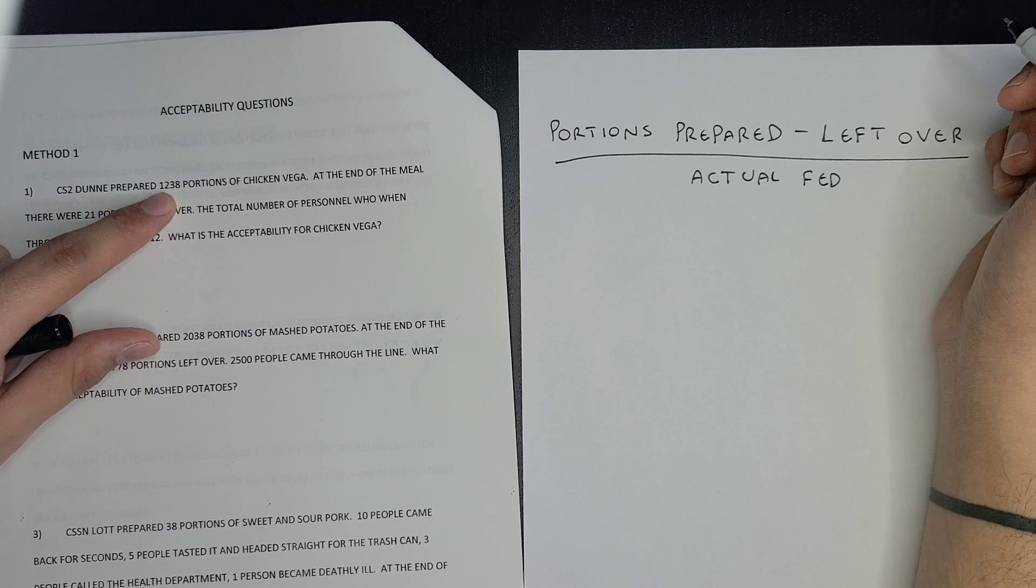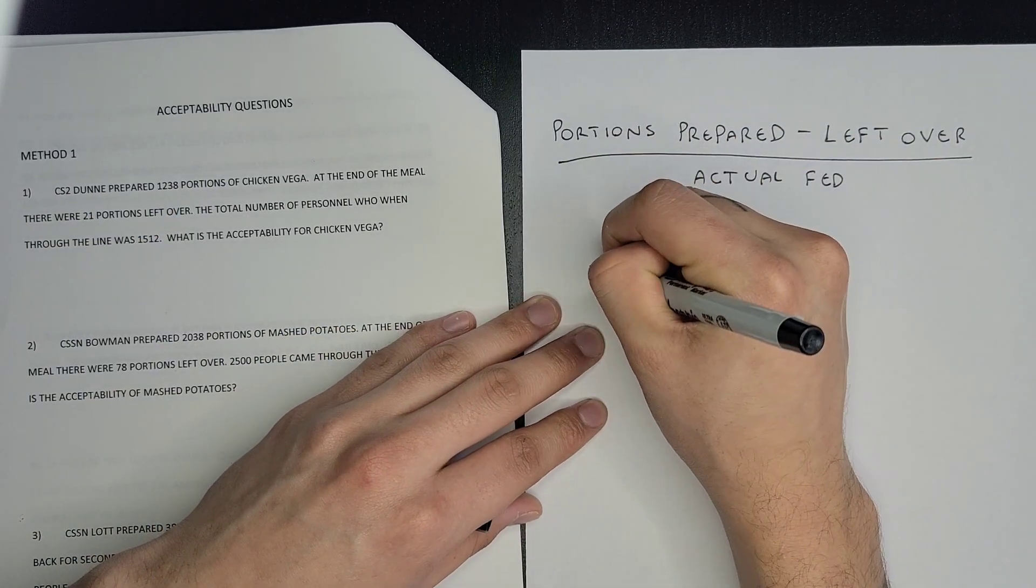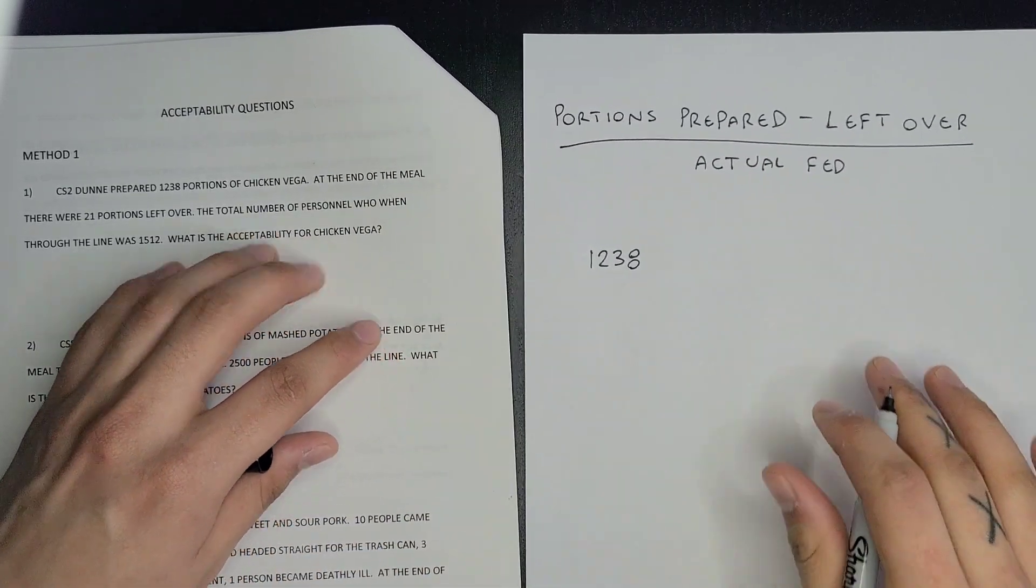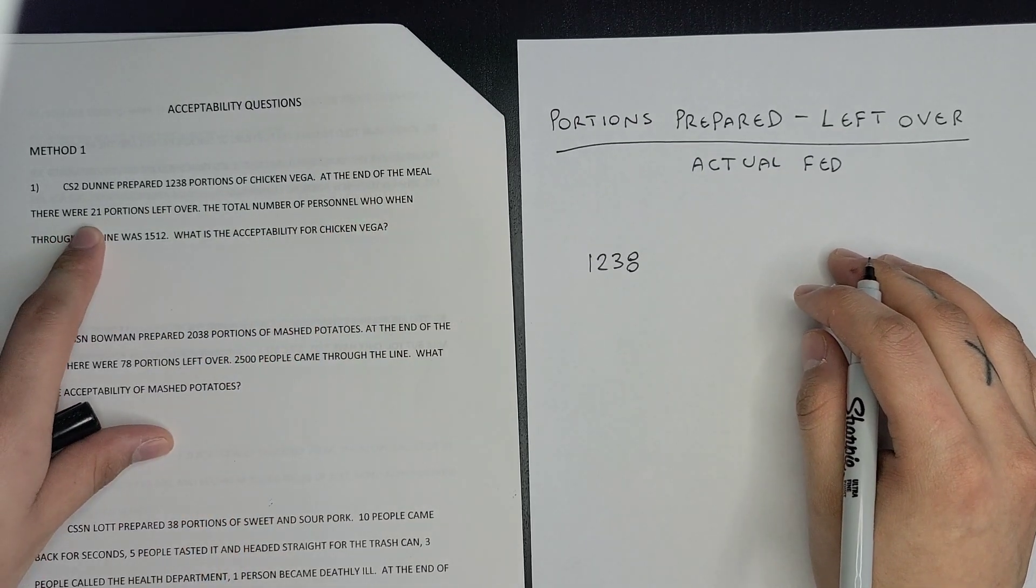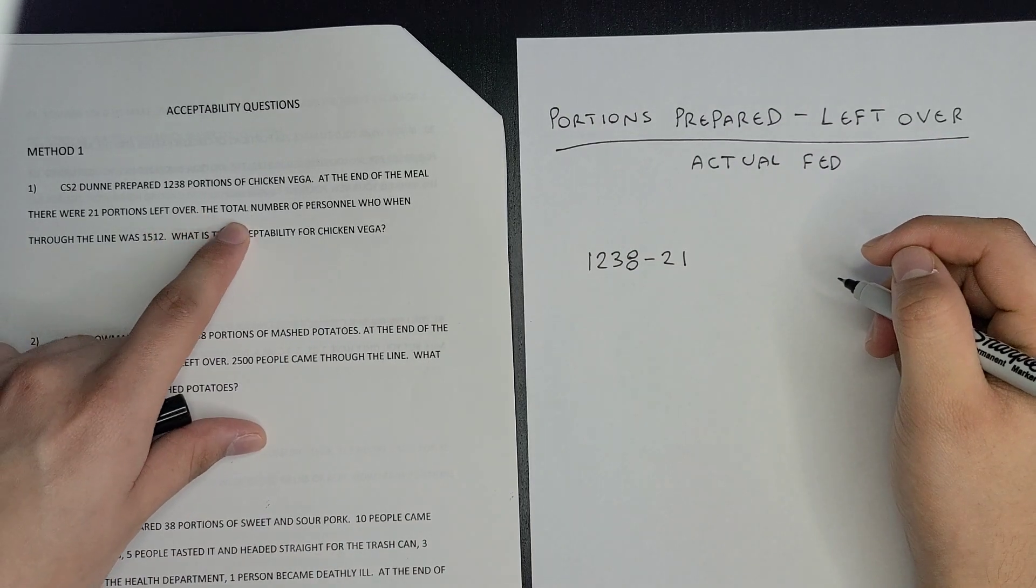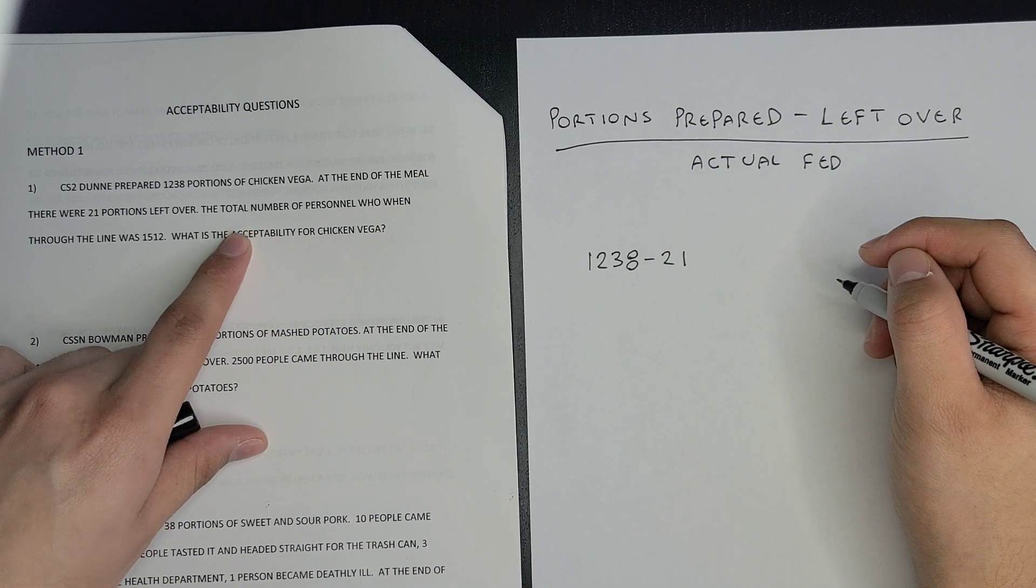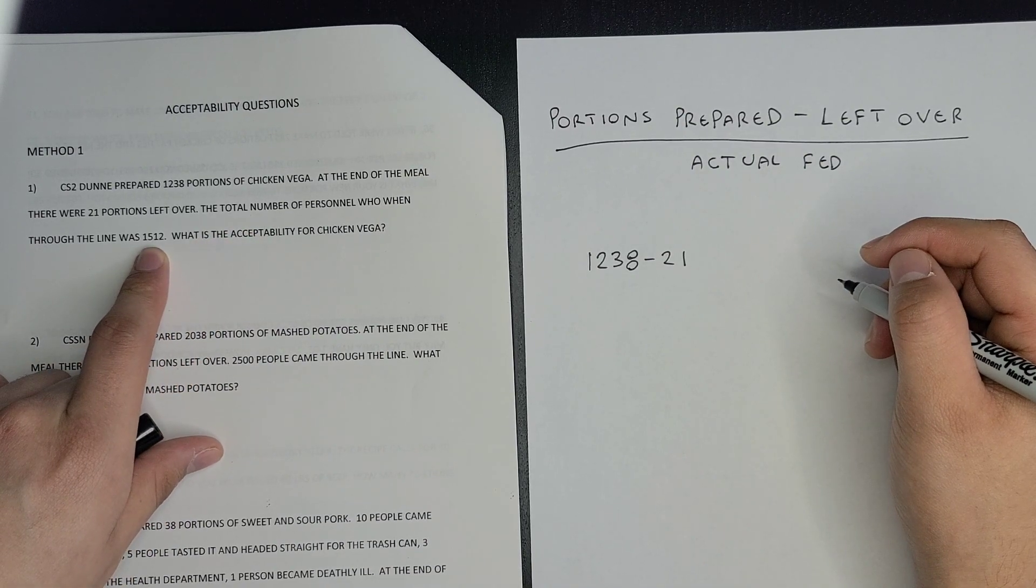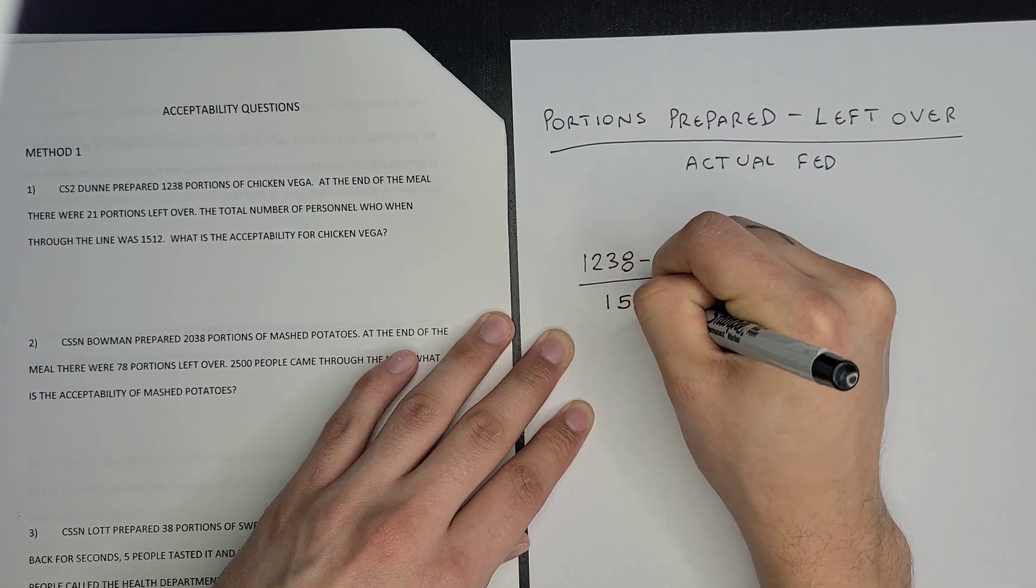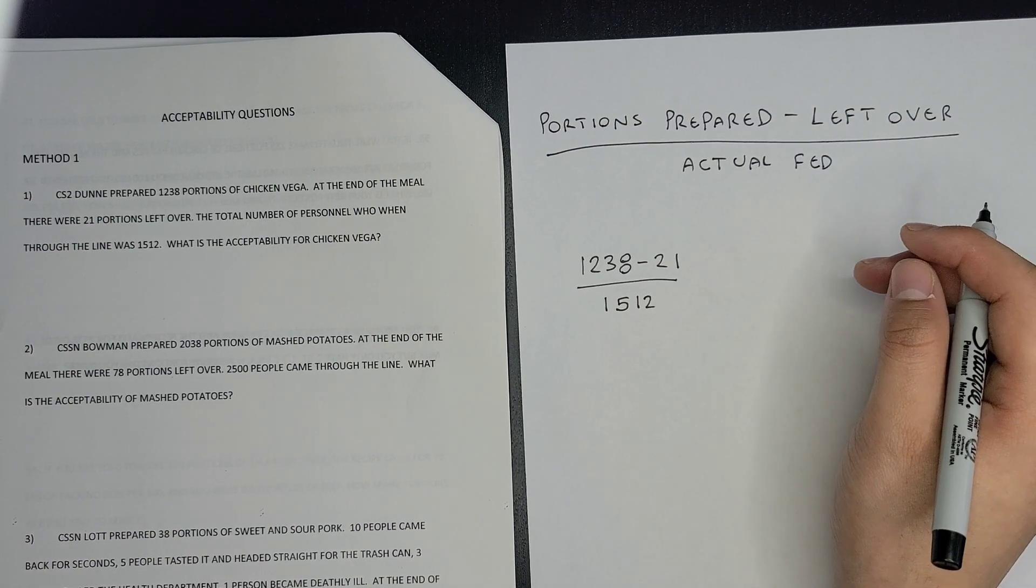One thousand two hundred and thirty-eight, that's your first number. At the end of the meal, there were 21 portions left over, so minus 21. The total number of personnel who went through the line was one thousand five hundred and twelve, so divided by one thousand five hundred and twelve.